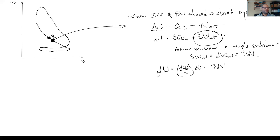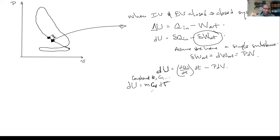The change in internal energy for an ideal gas of constant mass is M·Cv·dT. We're going to restrict our analysis to constant K and Cv. So M·Cv·dT equals the rate of heat input times dt minus P·dV, which gives: M·Cv·(dT/dθ)·dθ equals (dQ_in/dt)·(dθ/ω) minus P·(dV/dθ)·dθ.